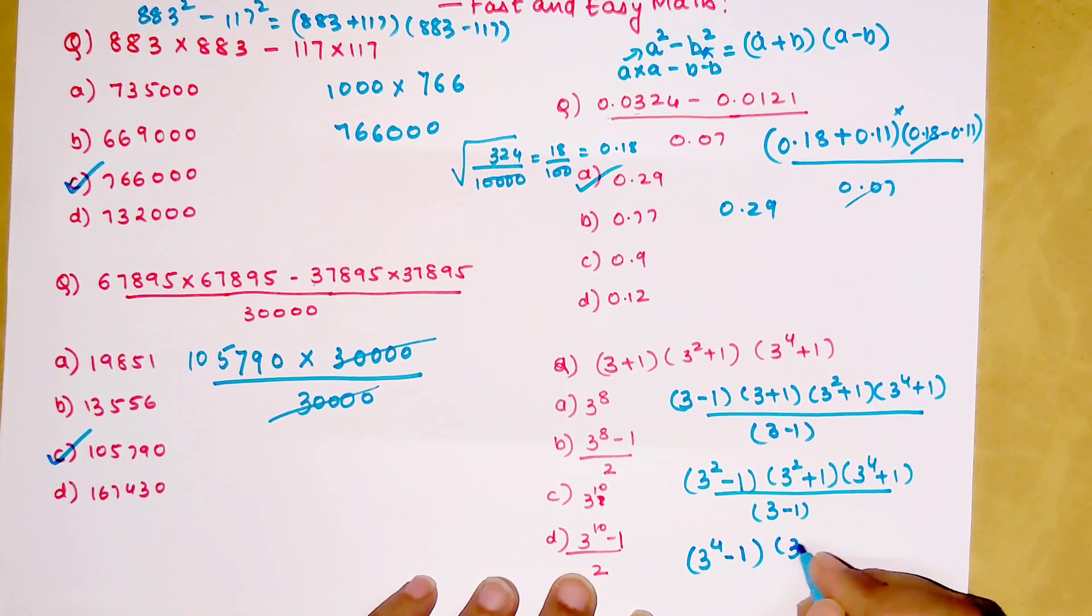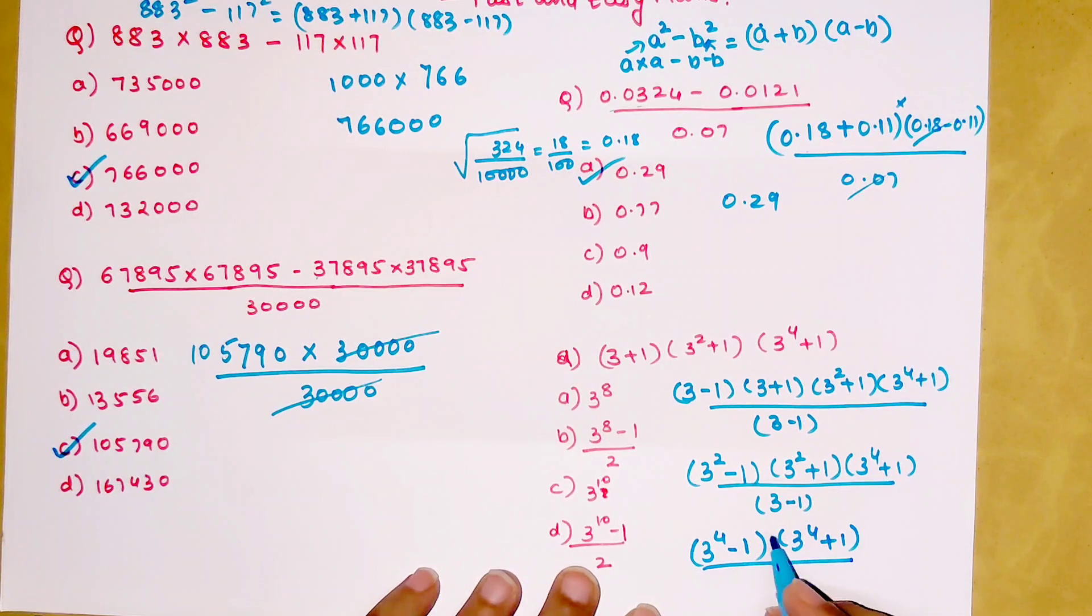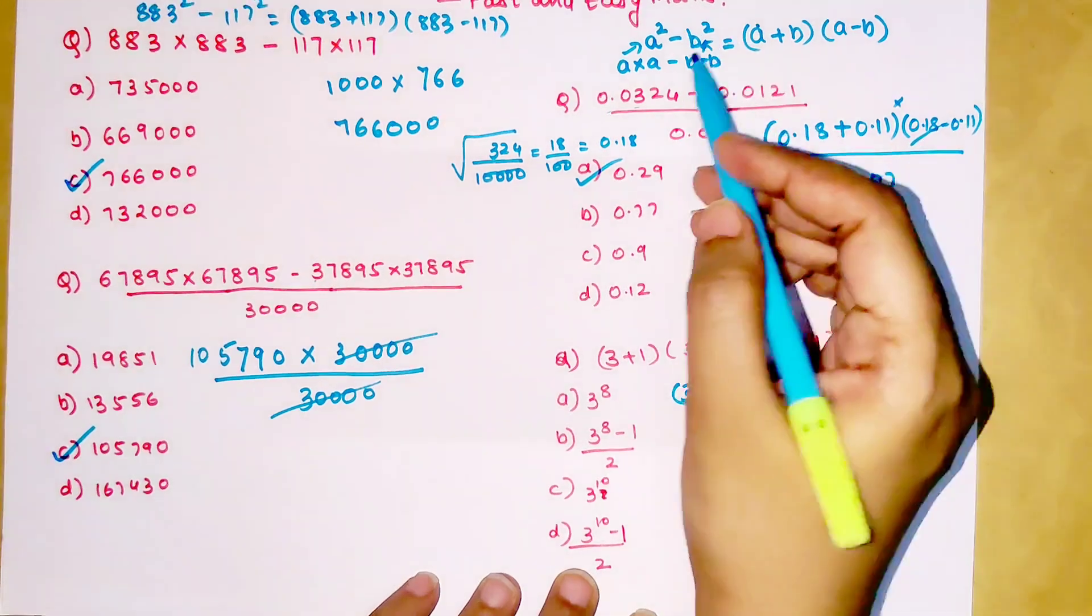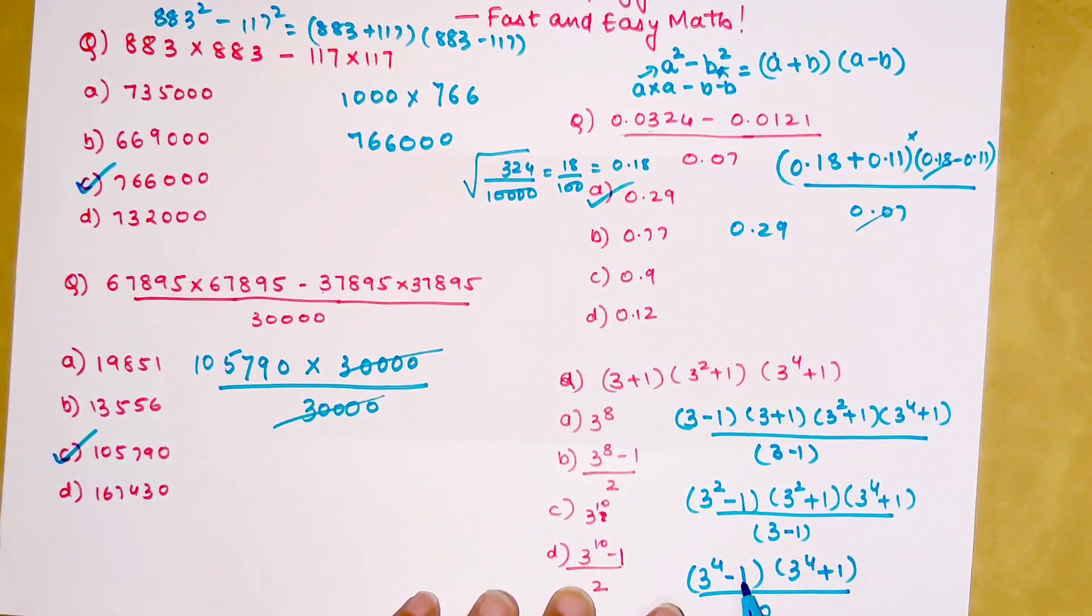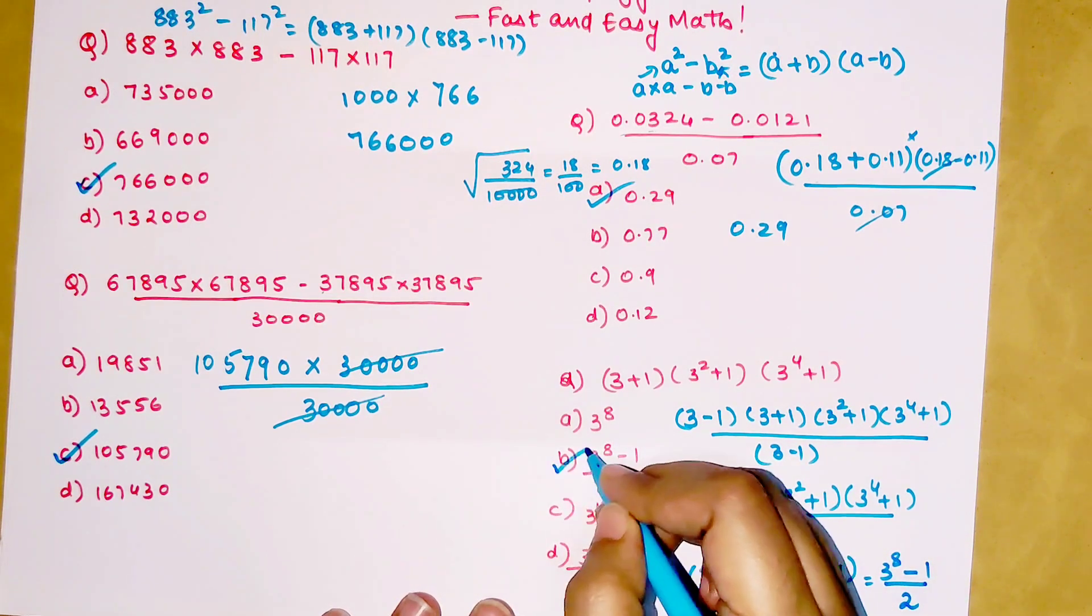Then you are left with 3⁴ + 1 in the denominator. I can write 3 - 1 as 2. If I apply this particular formula, we are just left with 3⁸ - 1 upon 2. So option B is my right answer.